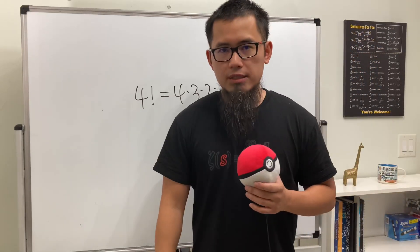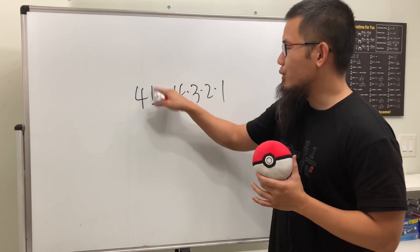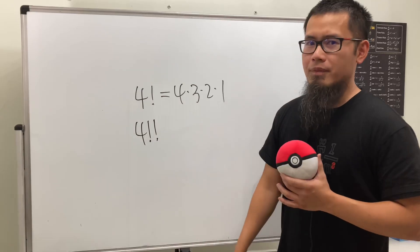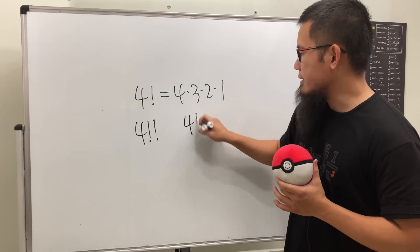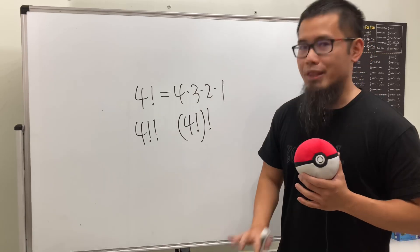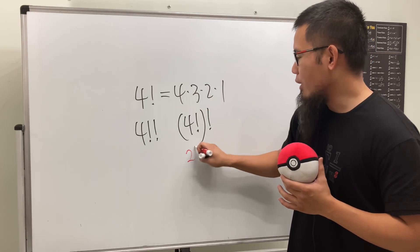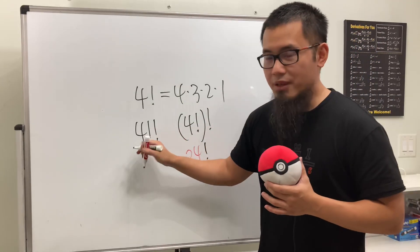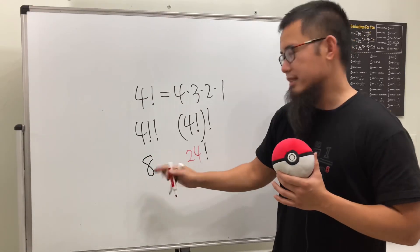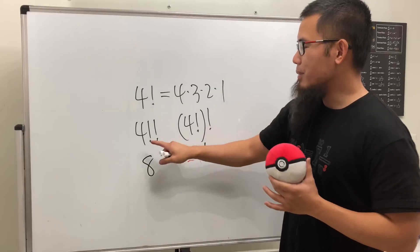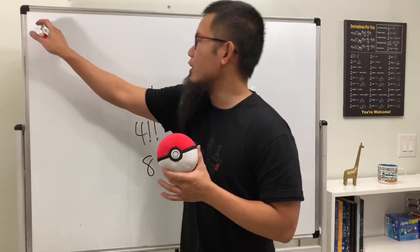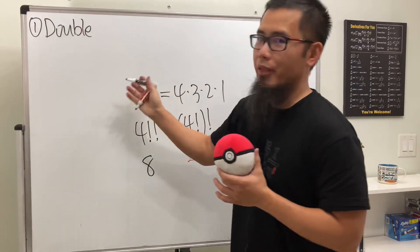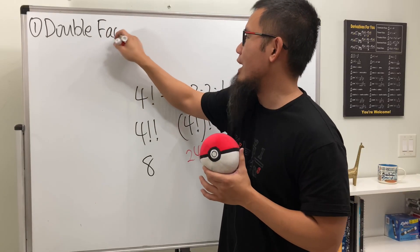Have you seen what happens if we put two exclamation marks, like four with two exclamation marks? Do we just do the first factorial by itself and then do another factorial? No — this gives us 24 inside, and then you factorial that. The answer is just equal to 8. This is called the double factorial — yes, it is a real thing.